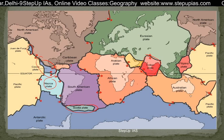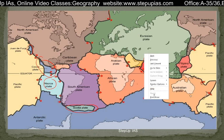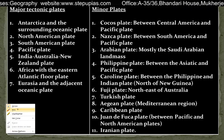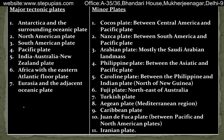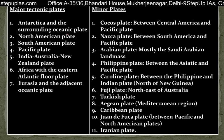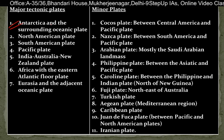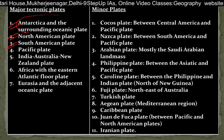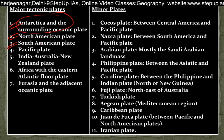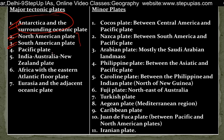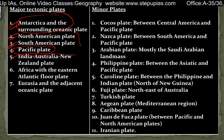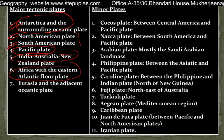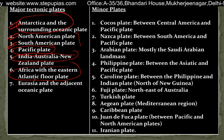Here we will note the major and minor plates. The major tectonic plates are: number one, Antarctica and the surrounding oceanic plates; North American plate; South American plate; Pacific plate; Indo-Australian–New Zealand plate; Africa with the eastern Atlantic floor plate; and the Eurasian plate.